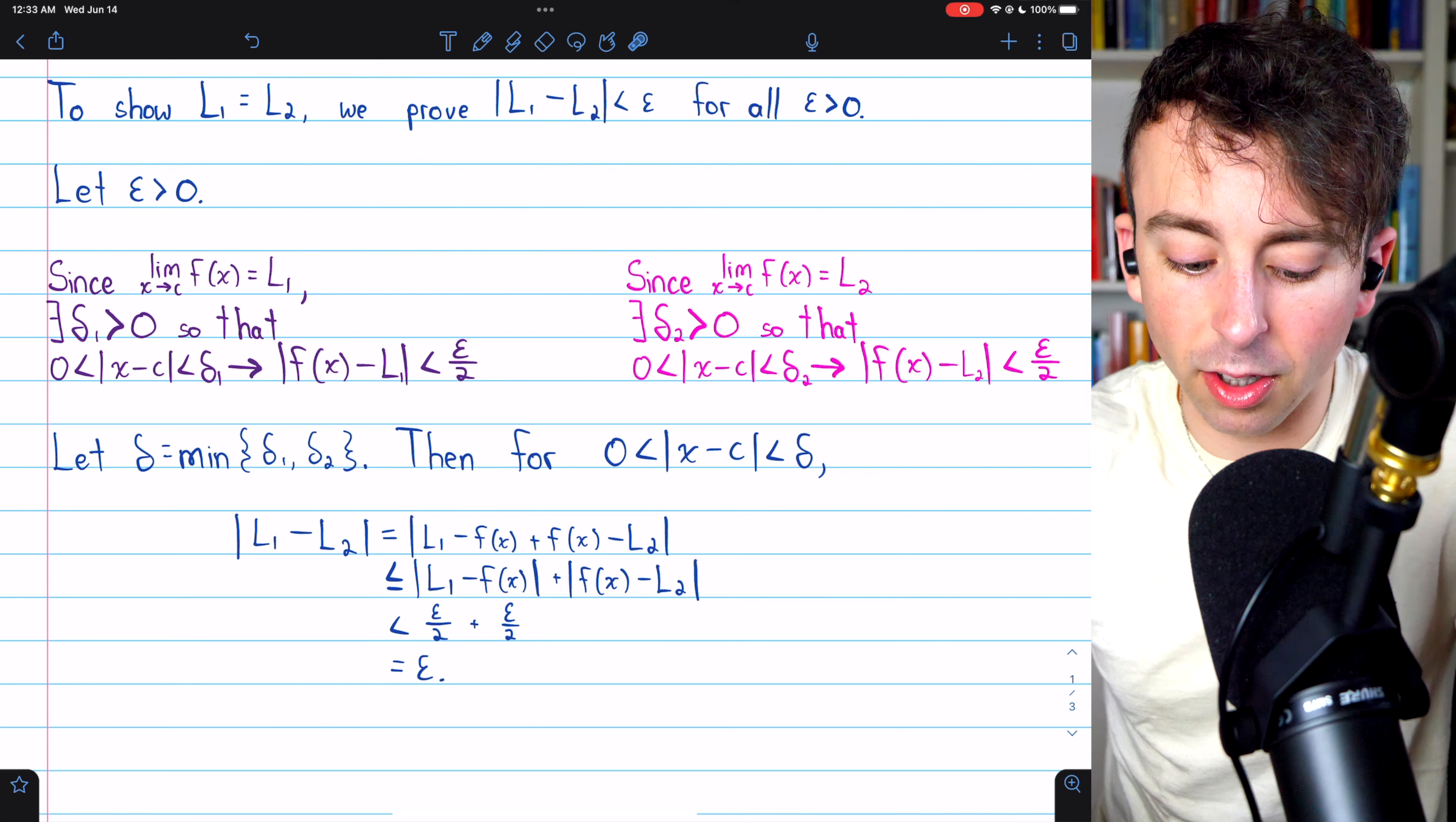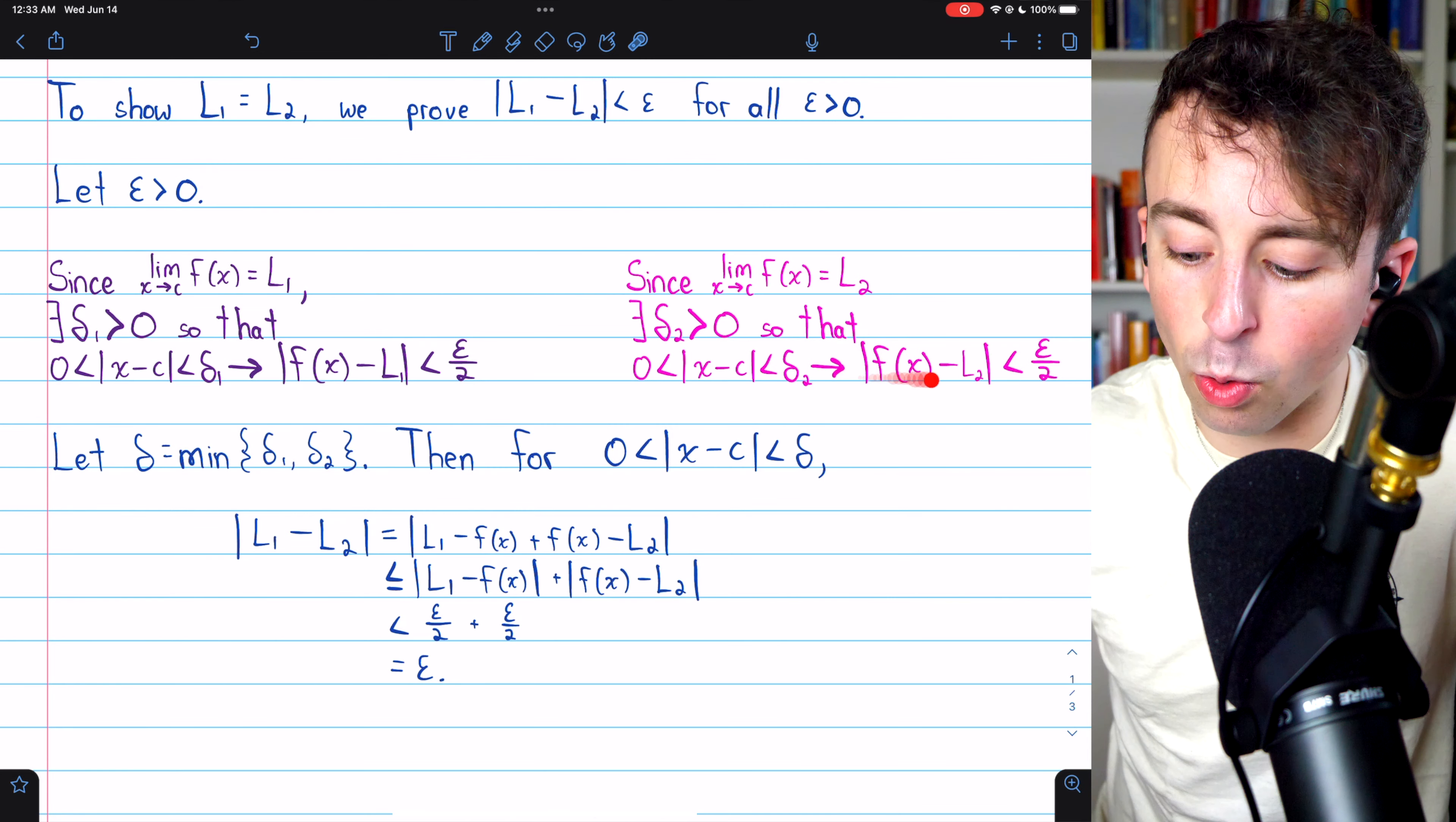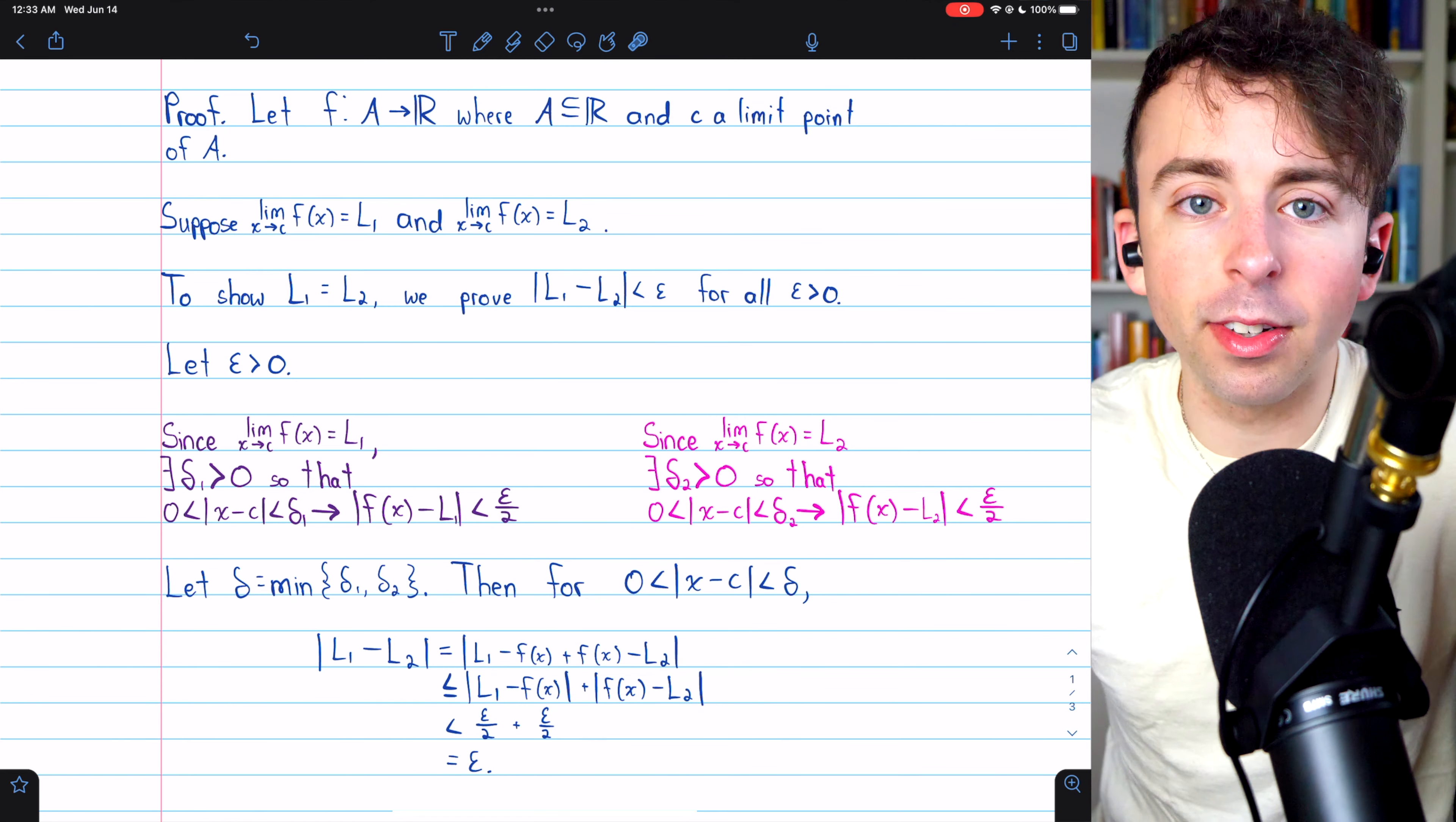Well, we just got to make sure that X is sufficiently close to C. It needs to be within delta 1 of C, and it needs to be within delta 2 of C. So we'll just set delta to be the minimum of delta 1 and delta 2. And then if X is within delta of C, both of these inequalities apply, and our proof is solid. Now we've shown that these two limits of f of X as X approaches C have a distance between each other that's less than any positive number.